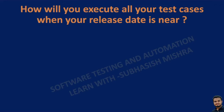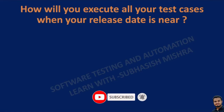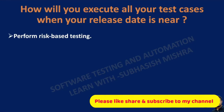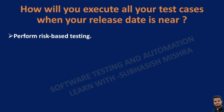So the question is: if the release deadline is nearby and we have to execute all our test cases, how will you do that? The first thing you should perform is risk-based testing. You should prioritize all your test cases like P1, P2, and P3, and start executing your P1 test cases first, then P2, then P3 and so on. So you should prioritize your test cases and perform risk-based testing.